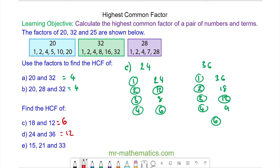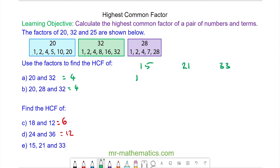And for question E, the factors of 15 are 1 and 15, 3 and 5. The factors of 21, 1 and 21, 3 and 7. And for 33, 1 and 33, 3 and 11. And we can see that 3 is the highest common factor of all three numbers.